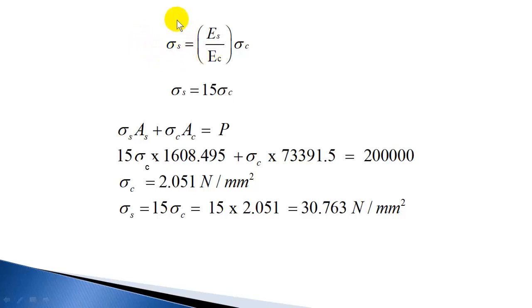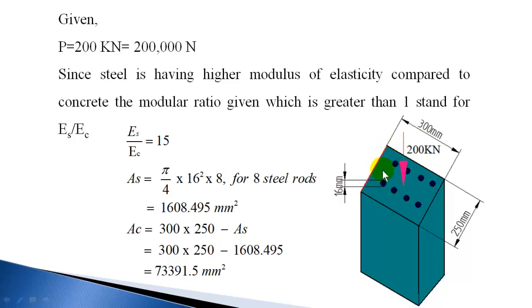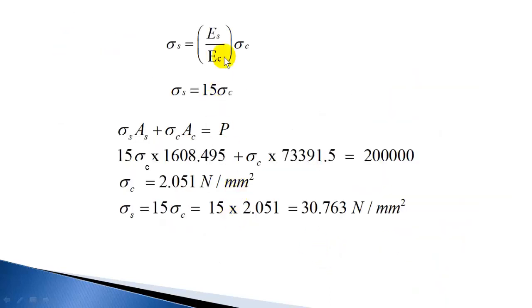The strains are equal because deformations must be equal in a composite bar. When subjected to load, both materials reduce in length by the same extent, since the steel rods and concrete are rigidly connected. Equal deformation over the same length gives equal strain: σs/Es = σc/Ec. Therefore σs = (Es/Ec) × σc = 15 × σc. The stress induced in steel is 15 times the stress induced in concrete.